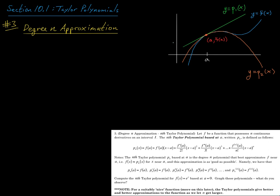Looking at the graph of a function f near a point (a, f(a)), we have the linear approximation p1(x) in green — that's degree one — and we have the quadratic approximation p2(x), that's degree two. We could also look at a cubic approximation p3(x), that's a degree three polynomial, and a quartic approximation p4(x), that's a degree four polynomial, and so on.